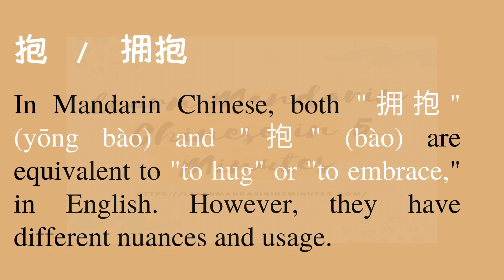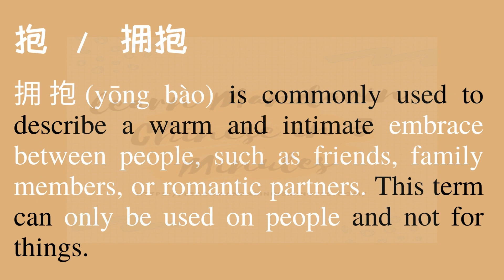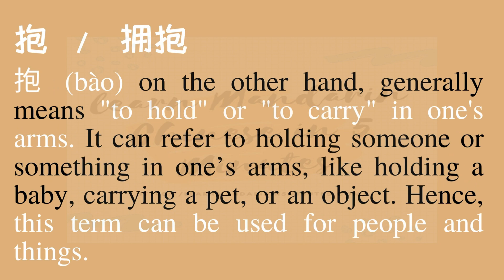抱 versus 拥抱: In Mandarin Chinese, both 拥抱 and 抱 are equivalent to 'to hug' or 'to embrace' in English. However, they have different nuances and usage. 拥抱 is commonly used to describe a warm and intimate embrace between people, such as friends, family members, or romantic partners. 抱, on the other hand, generally means to hold or to carry in one's arms. It can refer to holding someone or something in one's arms, like holding a baby, carrying a pet, or an object. Hence, this term can be used for both people and things.